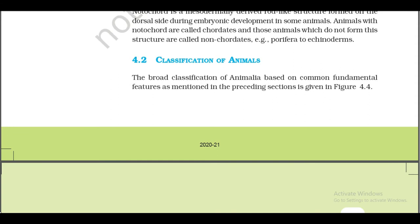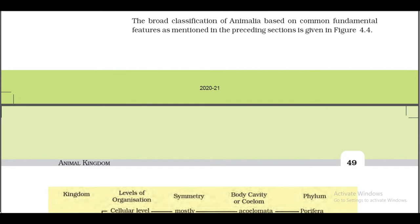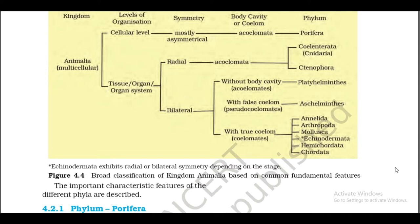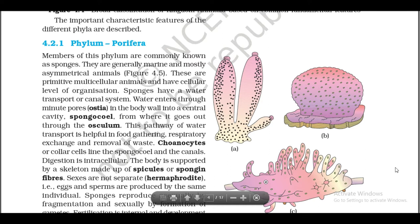4.2 Classification of Animals. The broad classification of Animalia based on common fundamental features is shown in Figure 4.4. The important characteristic features of the different phyla are described below. 4.2.1 Phylum Porifera. Members of this phylum are commonly known as sponges. They are generally marine and mostly asymmetrical animals (Figure 4.5). These are primitive multicellular animals and have cellular level of organization.